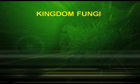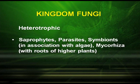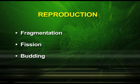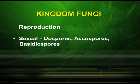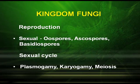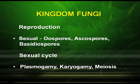Kingdom Fungi. They are heterotrophic. They may be saprophytes, parasites, symbionts when found in association with algae, or mycorrhiza when found with the roots of higher plants. Reproduction may be by vegetative means — fragmentation, fission and budding. Asexual reproduction may be by spores, conidia, sporangiospores, or zoospores. Sexual reproduction is by oospores, ascospores, and basidiospores. Their sexual cycle follows three stages: plasmogamy, karyogamy, and meiosis. Plasmogamy is the fusion of protoplast; karyogamy is the fusion of nuclei, resulting in the formation of a zygote. This zygote then undergoes meiotic division and forms haploid spores.